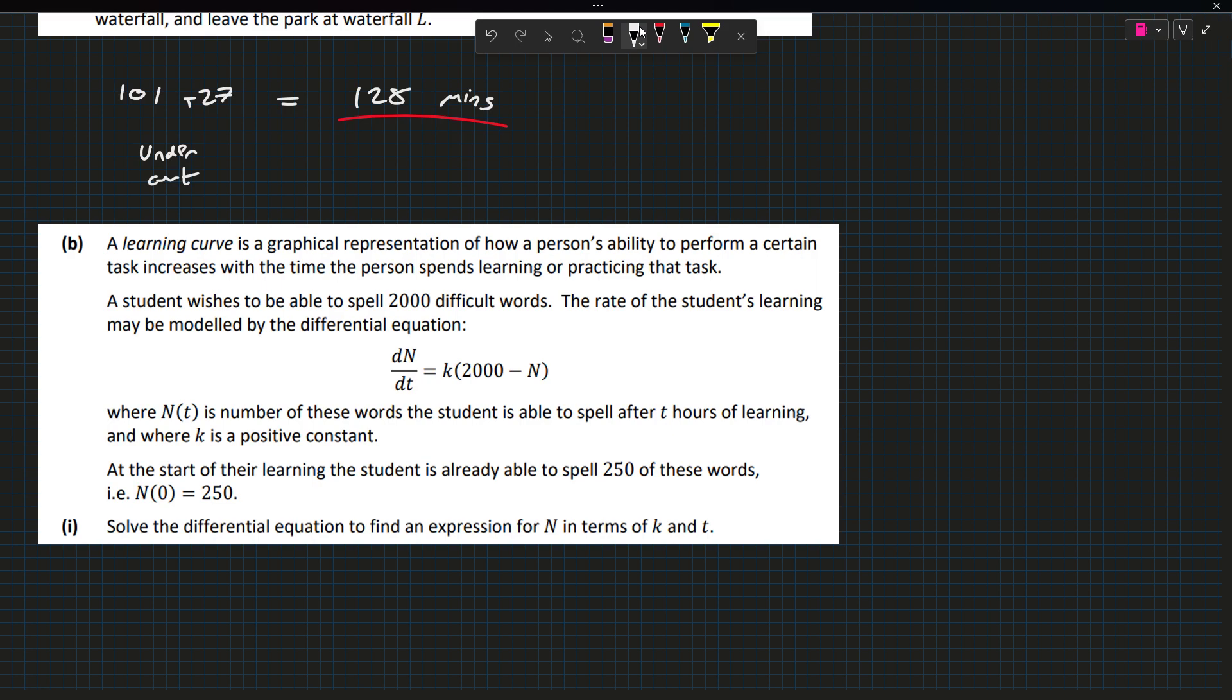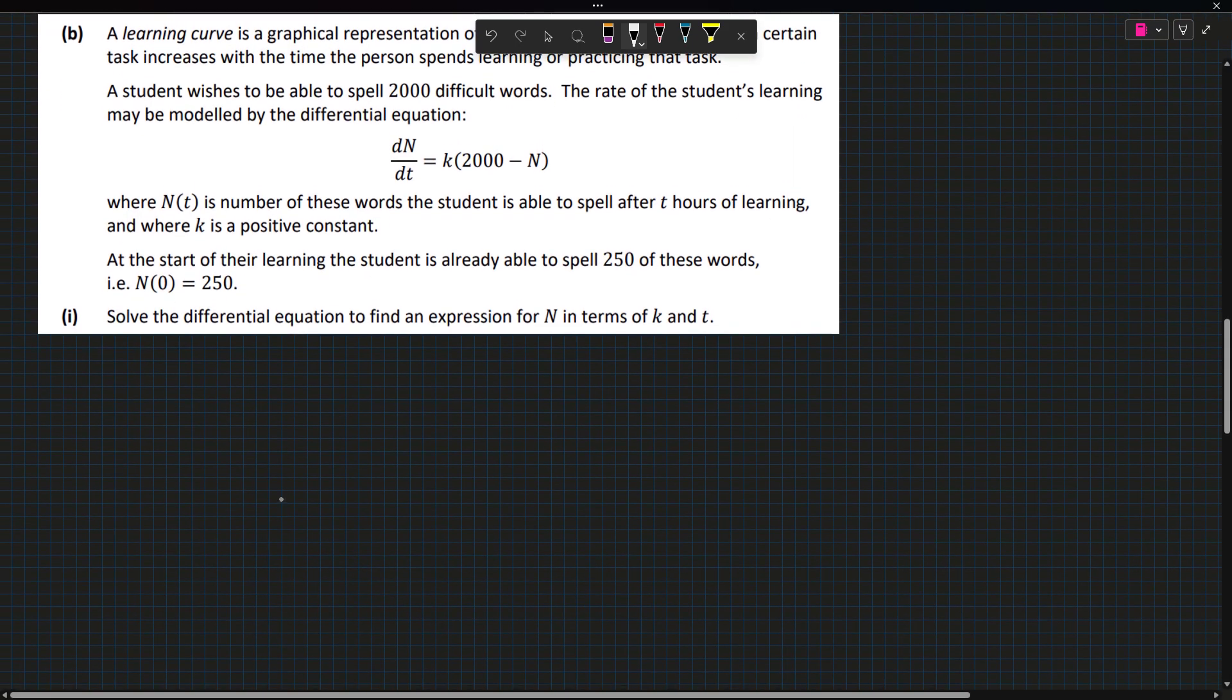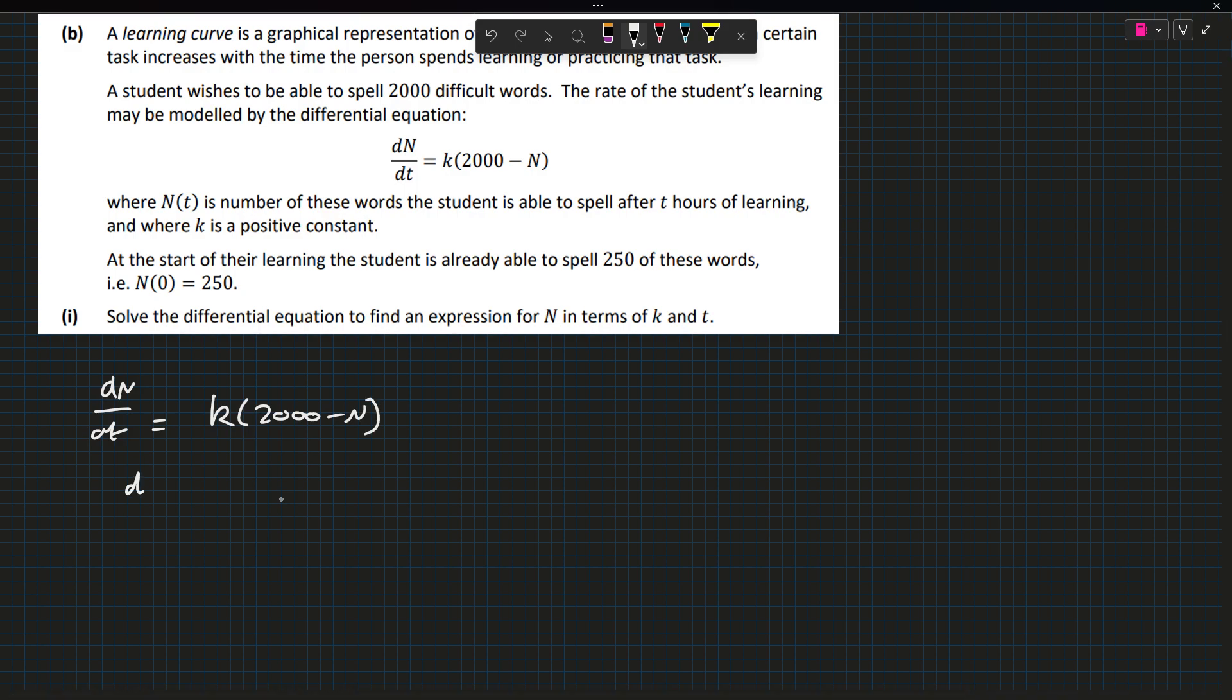We now have another differential equations problem. A learning curve is a graphical representation of how a person's ability to perform a certain task increases with time. This is reminding me of 2022's paper with the forgetfulness curve. I solve differential equations when t is 0 and n is 250. So dn/dt is k times 2000 minus n. So dn over 2000 minus n equals k dt. And then I integrate.